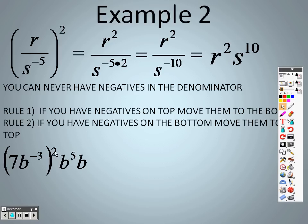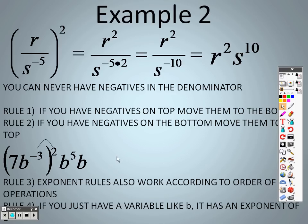With this one, I have to first do parentheses, just like order of operations. It's please excuse my dear Aunt Sally. P is first, so let's do the parentheses first. So I have to take that 2 through to each item. That's like saying 7 to the first power, so 1 times 2 is 2, so I get 7 squared, and negative 3 times 2 is negative 6. I distribute that through: 7 squared, b to the negative 6, and I still have a b to the 5th and a b.